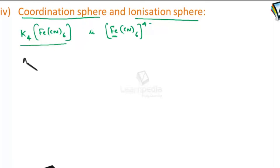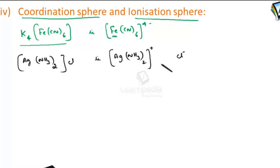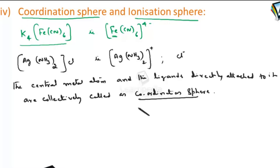Similarly, when we take [Ag(NH₃)₂]Cl, the silver atom to which two ammonia ligands are attached — put in square brackets as [Ag(NH₃)₂]⁺ — is the coordination sphere. The Cl outside the square bracket, which comes out as an ion when put in water, is the ionization sphere. Thus, the central metal atom and the ligands directly attached to it are collectively called the coordination sphere, written inside square brackets, as seen here in the diamine silver(I) complex ion.